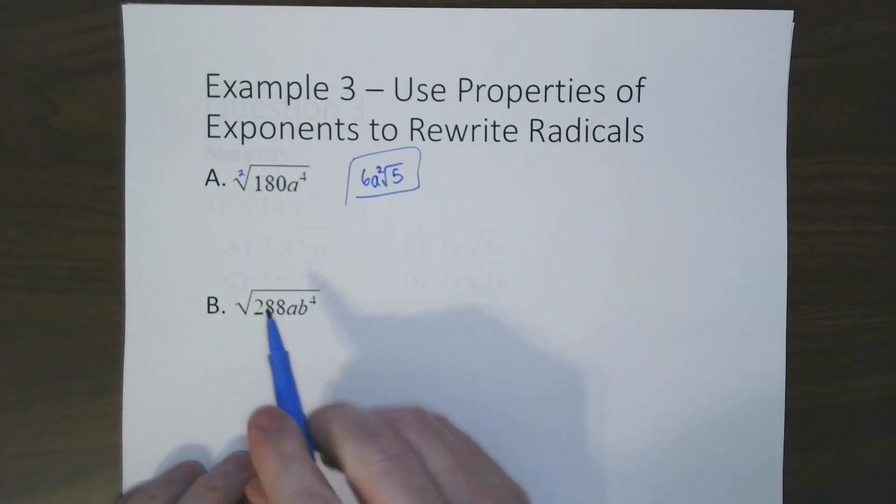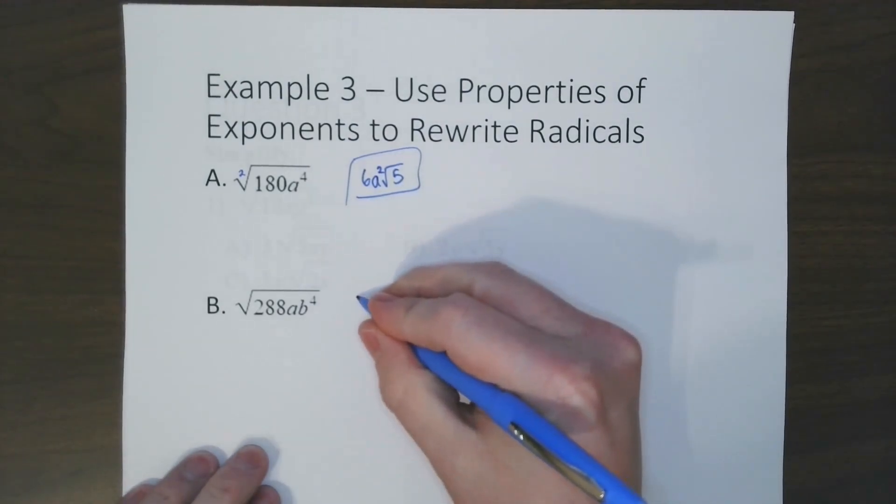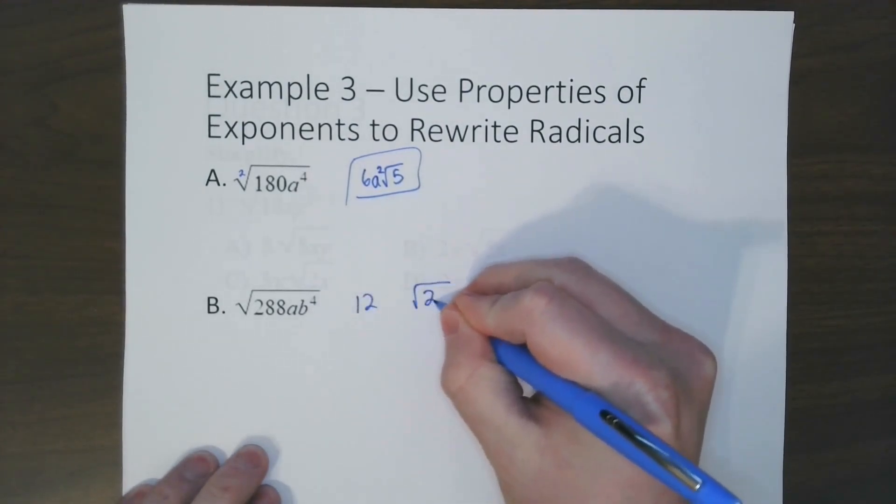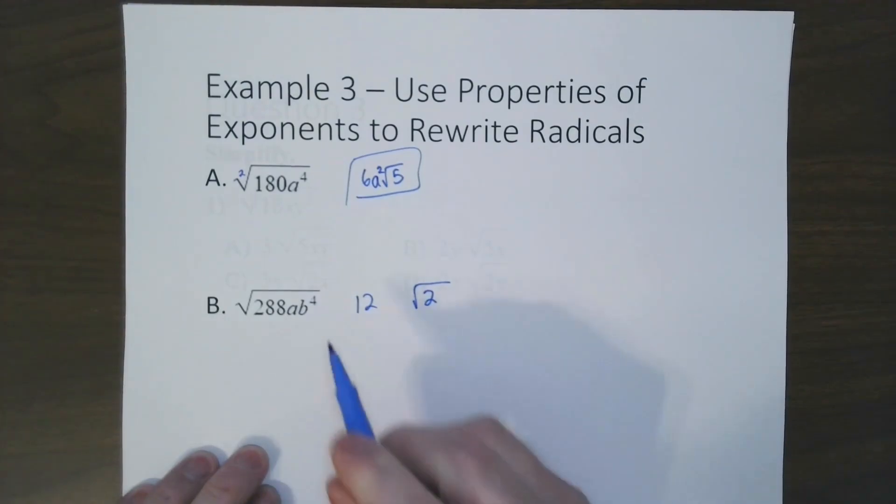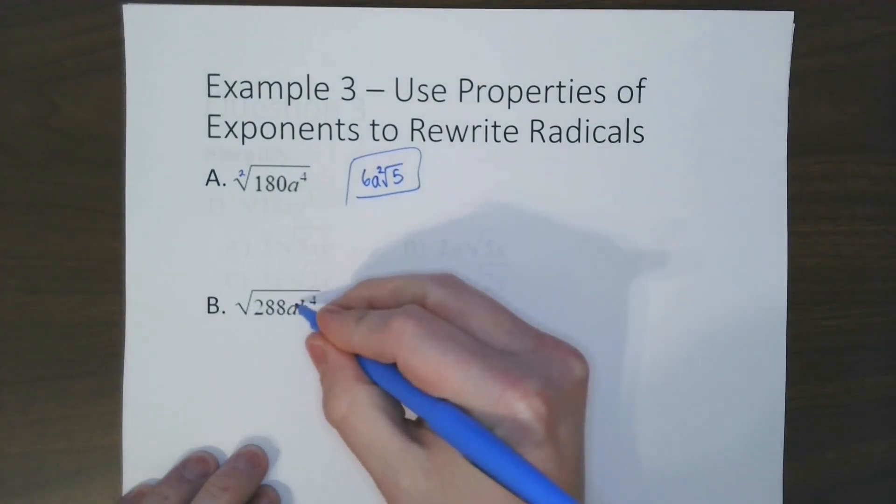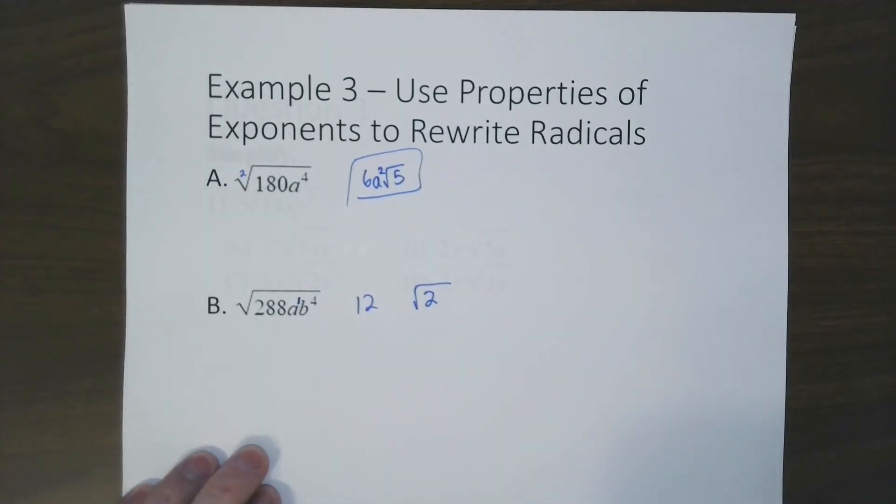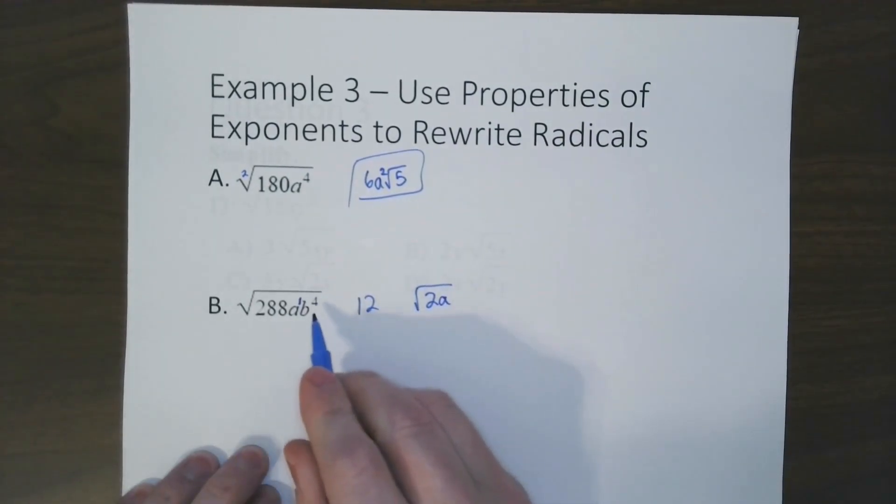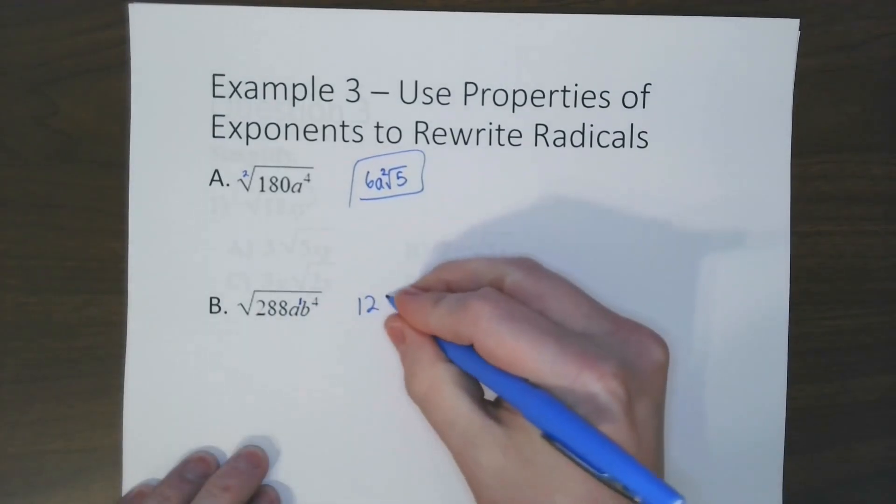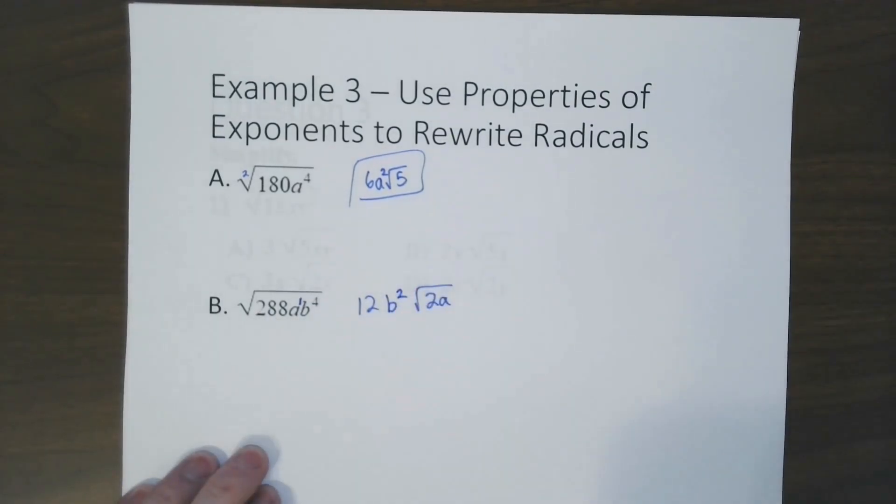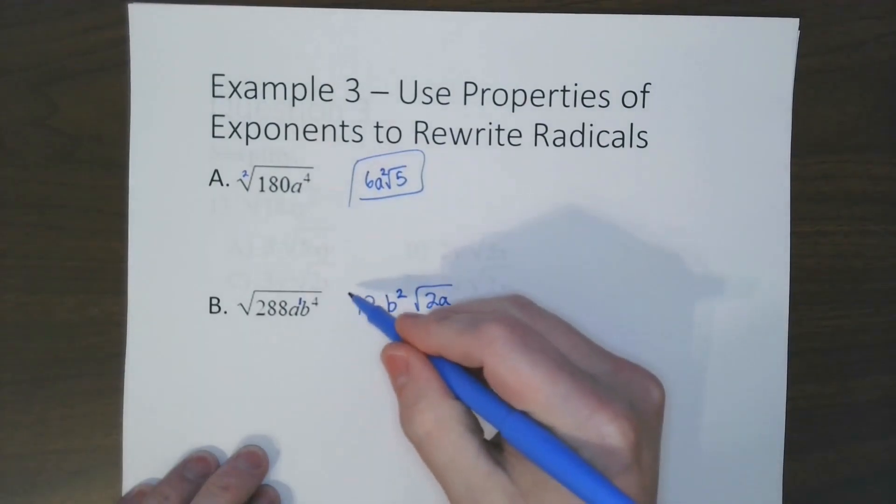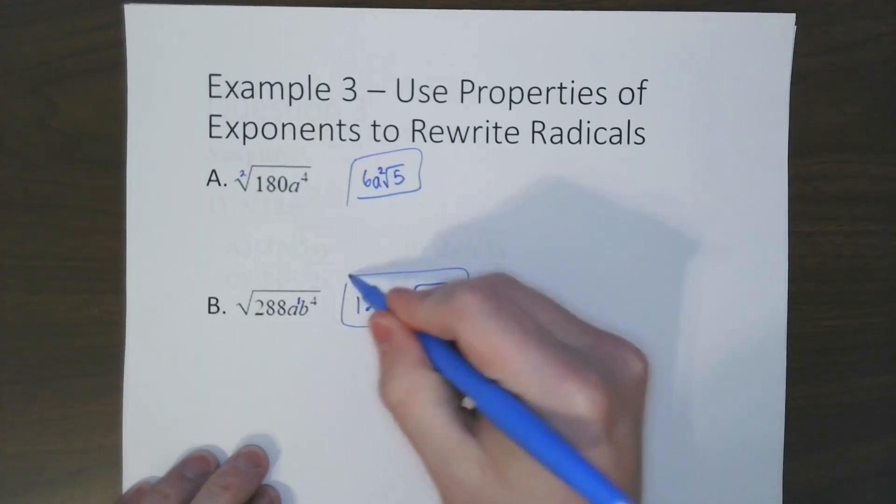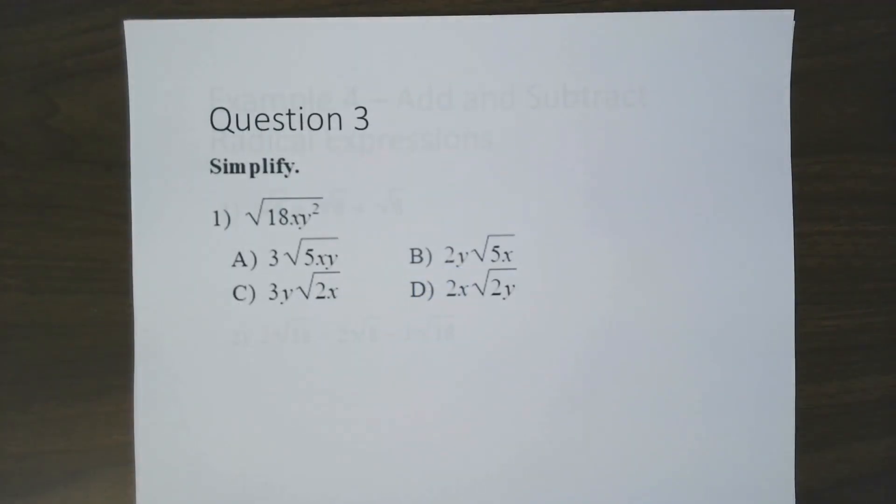Now for part b, same thing. Break apart the number in any way you need to. I get a 12 and a square root of 2. Now if we notice as we go through, this a has an exponent of 1. Since 2 does not divide 1 evenly, it stays in the radical. But 4 does divide by 2 evenly and leaves us with b squared. So that is our answer. 12b squared, radical 2a. Go ahead and try this problem.